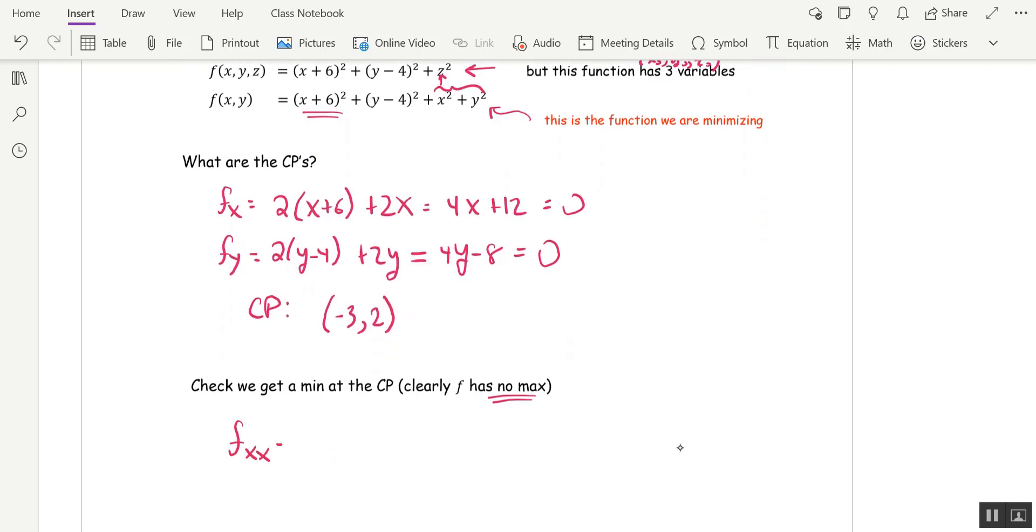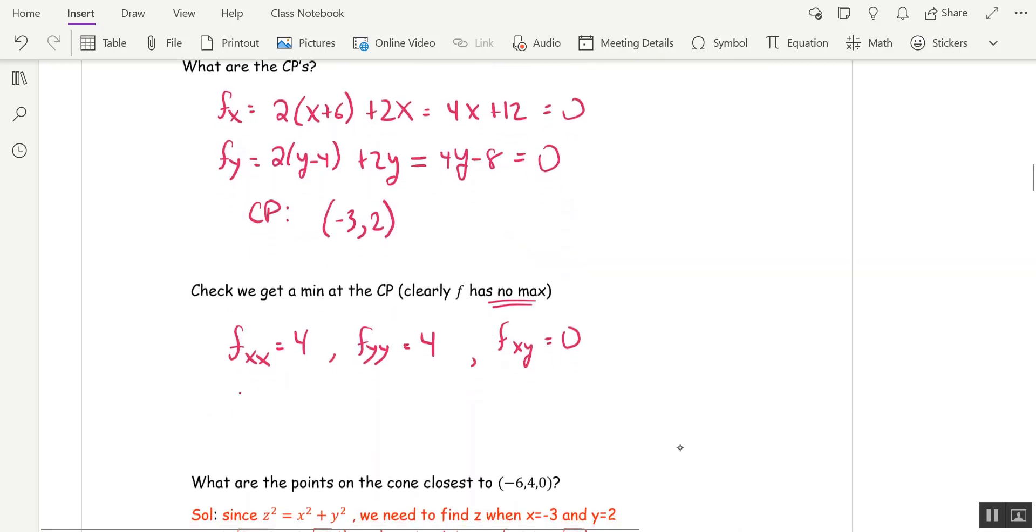fxx is 4. fyy is 4, and fxy is 0. So the discriminant, d, is 4 times 4 is 16, minus 0 squared, that's 16. That's positive. fxx is 4. That's always positive, nothing to plug in. So indeed, we have a local min.